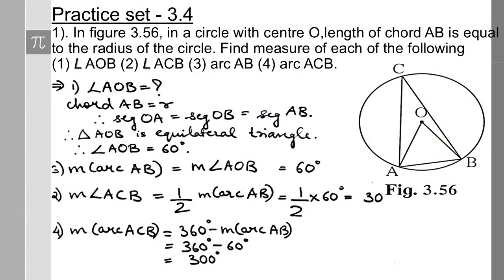This is the first question. The question says: in figure 3.56, a circle with center O — the length of chord AB is equal to the radius of the circle. In the diagram, OA is a radius, OB is also a radius, and chord AB is of the same length as the radius. So triangle AOB is an equilateral triangle since all three sides are congruent.